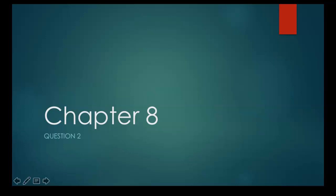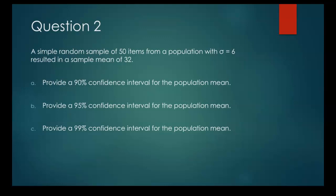Let's take a look at question number two from chapter eight. The question says a simple random sample of 50 items from a population with a standard deviation of six resulted in a sample mean of 32.